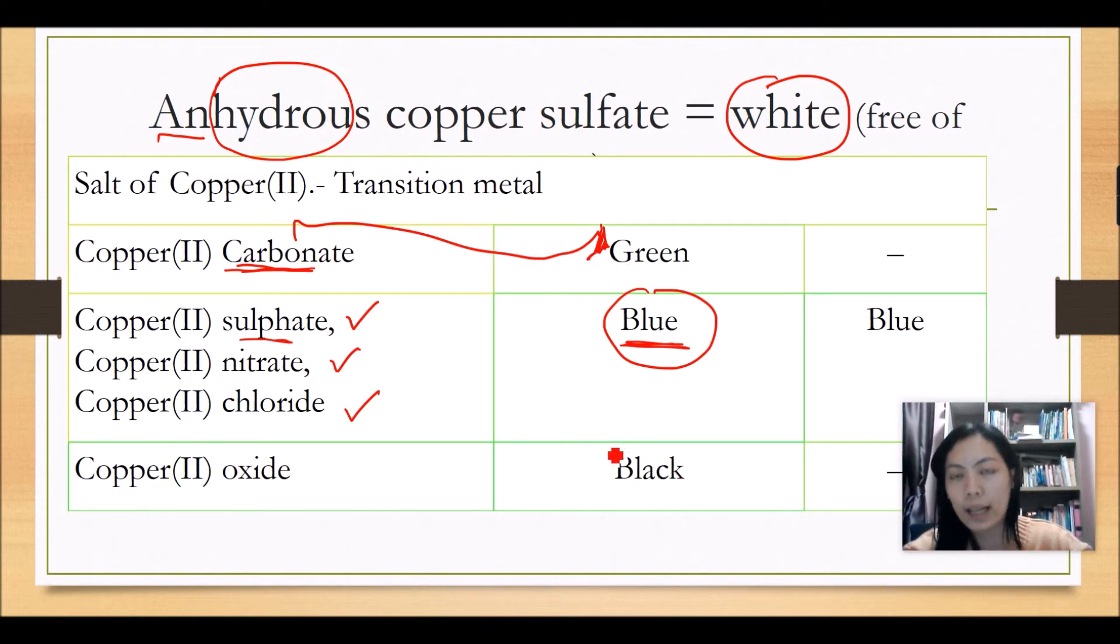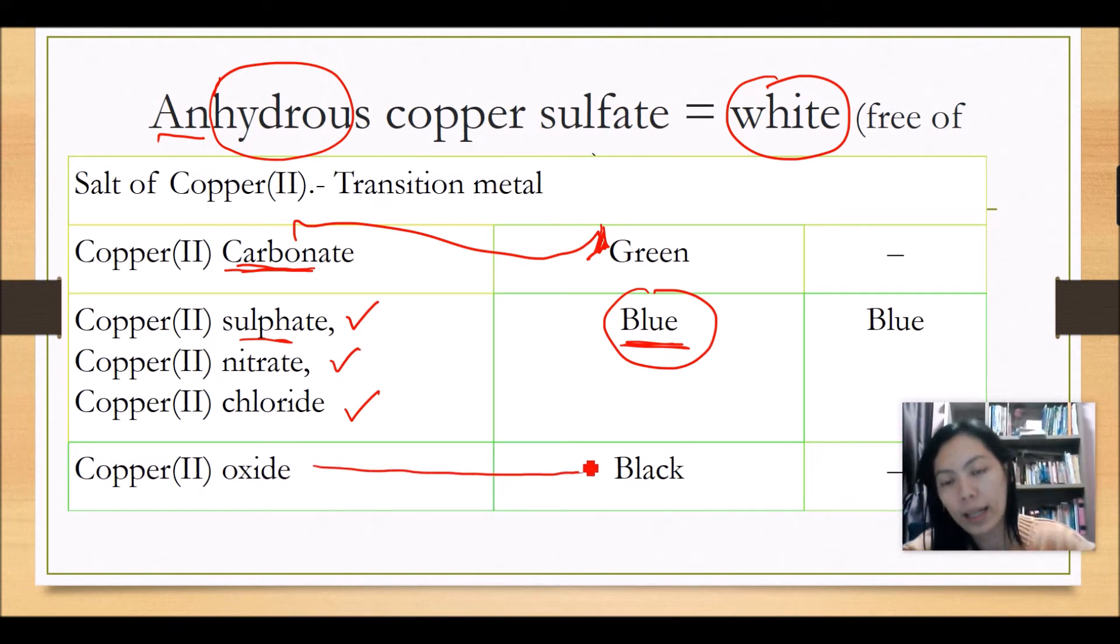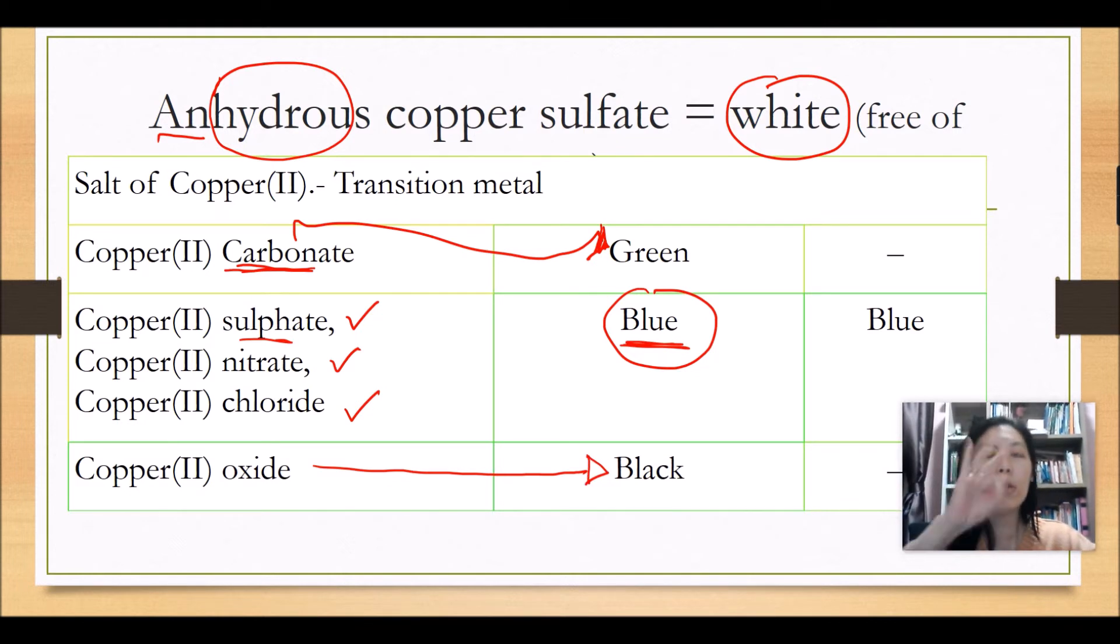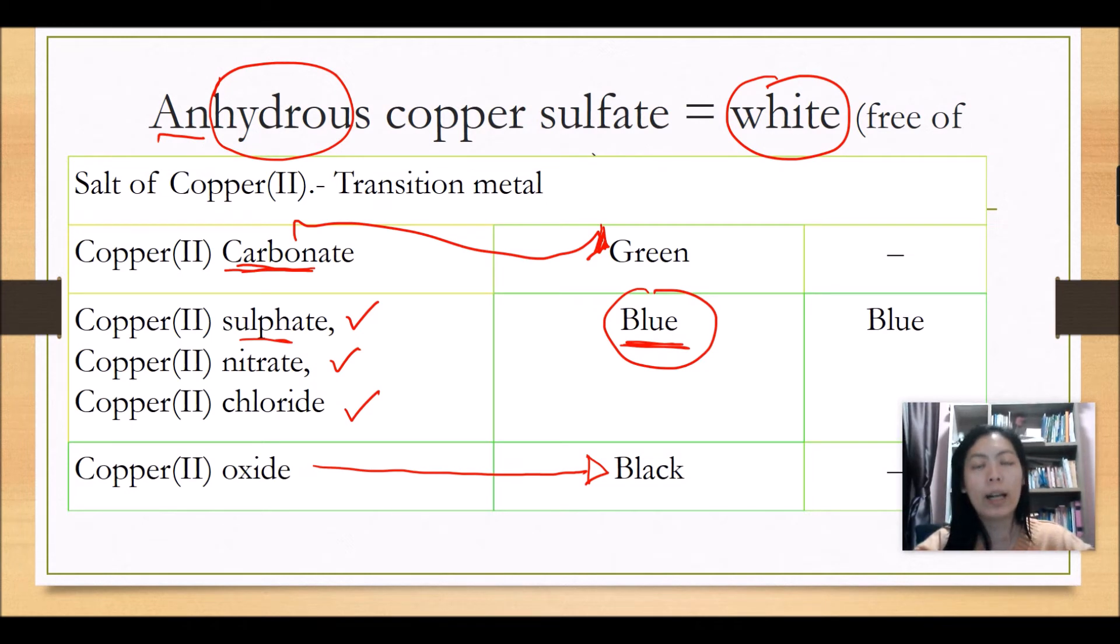There is also another color which is black. Copper oxide is actually black in color. So that is it. These are the only three colors you need to know for copper. Don't feel confused again after this.